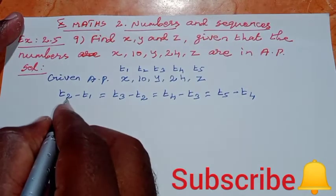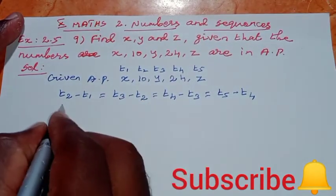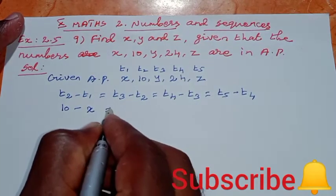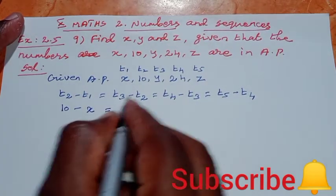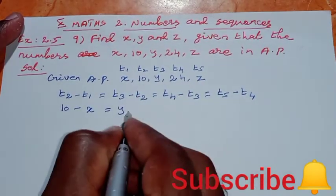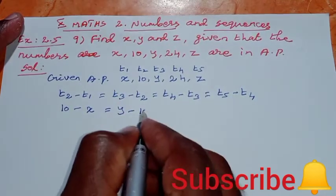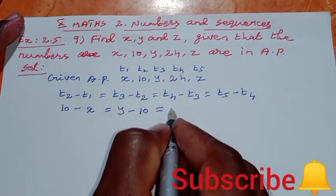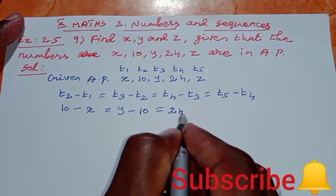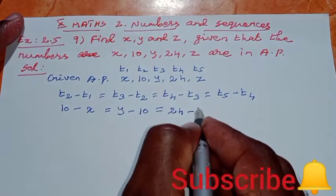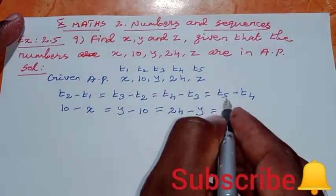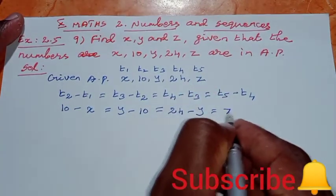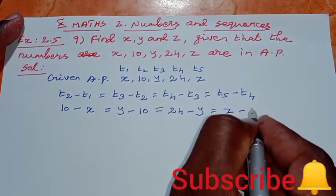Let's label the terms: T2 value is 10, minus first term x, is equal to T3 third term y minus T2 second term 10, equal to T4 value 24 minus third term y, is equal to T5 value z minus 24.